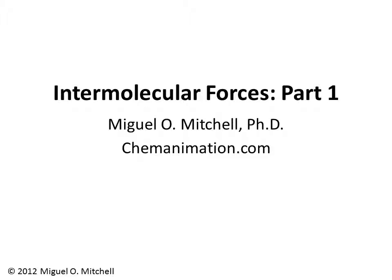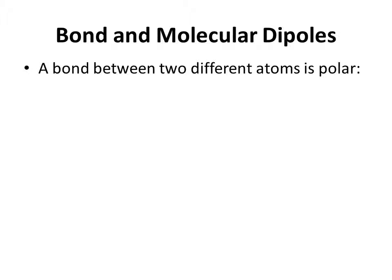Intermolecular Forces Part 1. A bond between two different atoms, such as C and O, is polar. If you look at the general example of X double bonded to Y, you see that Y is more electronegative than X, which puts a partial negative charge on Y. Electrons spend more time around Y than X, and that gives X a partial positive charge.